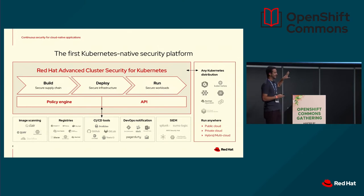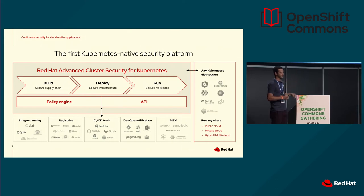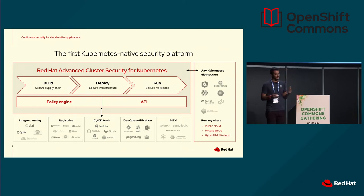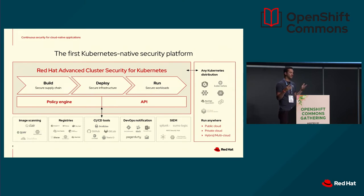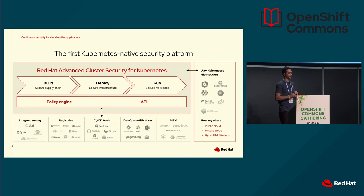Along the way we integrate with all the tools we know and love — from image registries and image scanners, we have our own scanner as Kirsten mentioned, different CI/CD tools to make integration easy, DevOps notifications, generic webhooks, and SIEMs. That's the full breadth of integrations we have. Our goal is to secure all of Kubernetes from the bottom up, everywhere, and we've been pretty Kubernetes distribution-agnostic — including OpenShift but also many Kubernetes distributions from the large cloud providers.